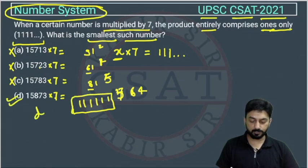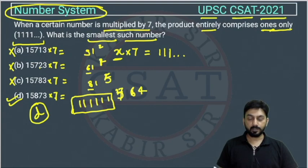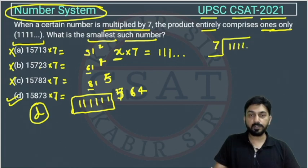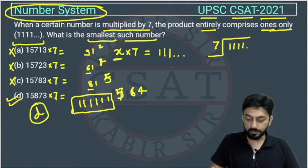Other option to solve it is like you have to divide. Suppose these are 1s. As you feel you are getting less 1, so you can add 1. So this is 7, you are getting 41.